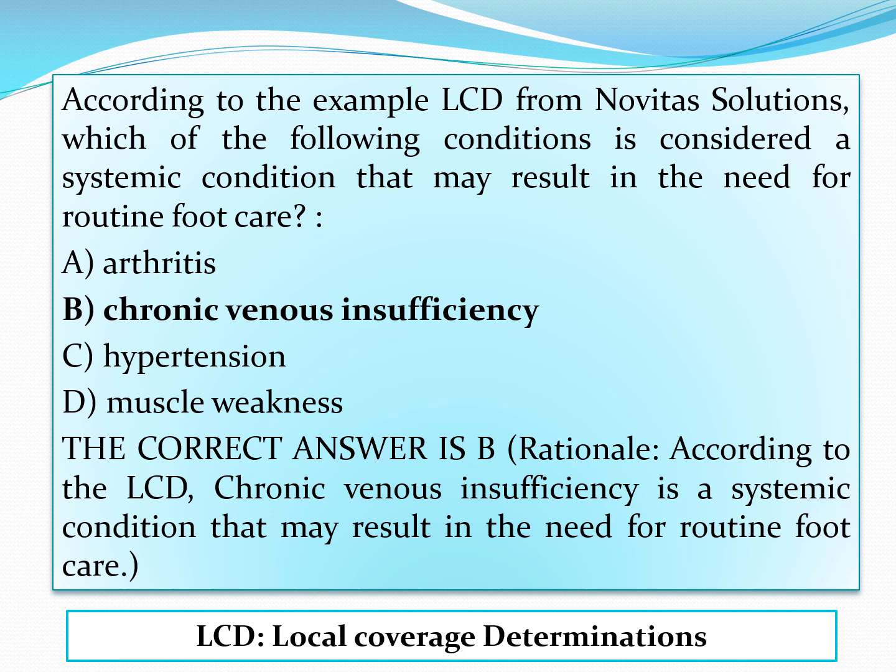According to the example LCD from Novitas Solutions, which of the following conditions is considered a systemic condition that may result in the need for routine foot care? Options are: arthritis, chronic venous insufficiency, hypertension, and muscle weakness. LCD stands for local coverage determinations. The correct answer is chronic venous insufficiency, which is described as a systemic condition that may result in the need for routine foot care.